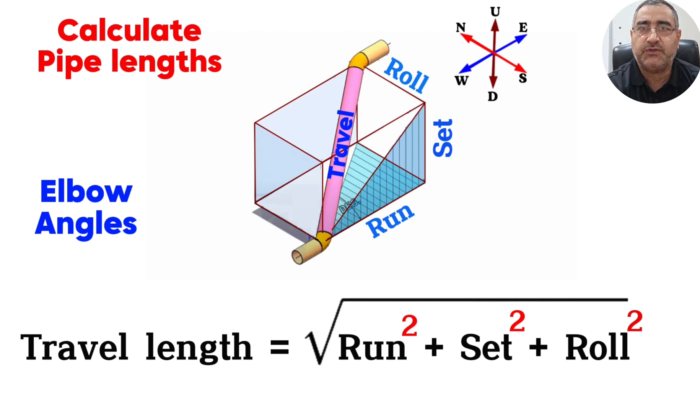This method is applicable when the pipeline displacement forms a right-angle parallelogram, as shown in the video. Using this formula allows for precise calculation of the pipeline's travel length within the right-angle parallelogram setup.